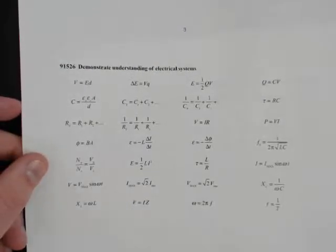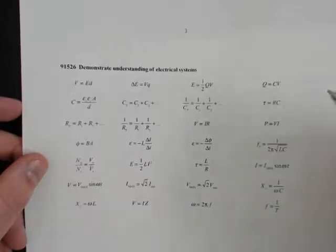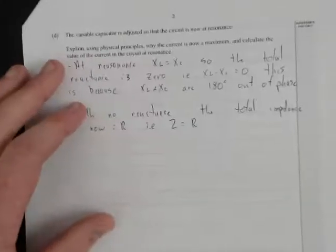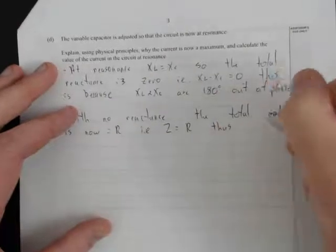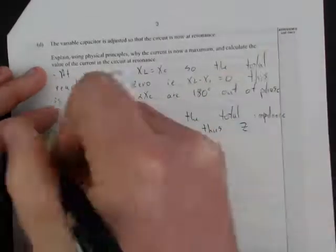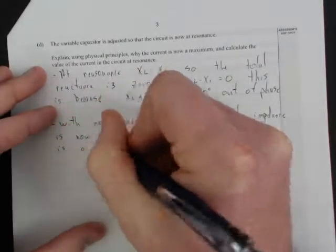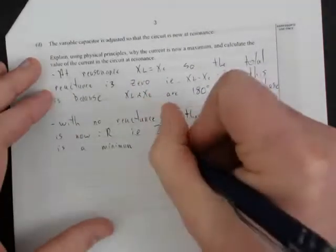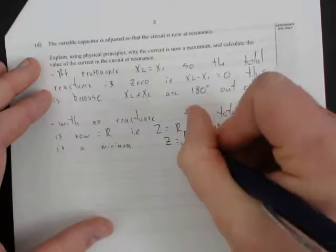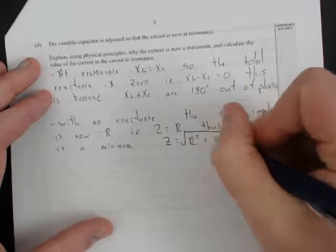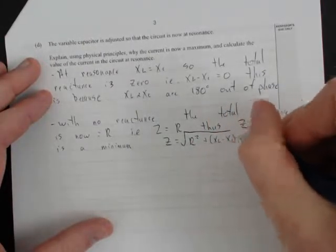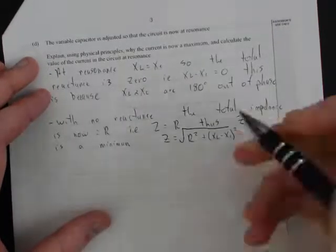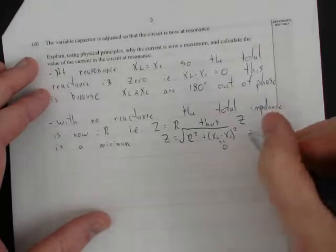If you look on the formula sheet, there's no formula linking total impedance to reactance and resistance—you just have to use a little bit of trigonometry. Thus, the impedance Z is minimum. It's a minimum because there's no reactance. Z ordinarily is equal to the square root of R² plus (XL - XC)². Because this here is now equal to zero, this just equals R.